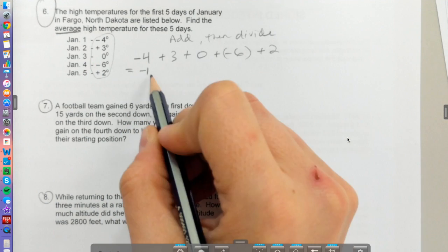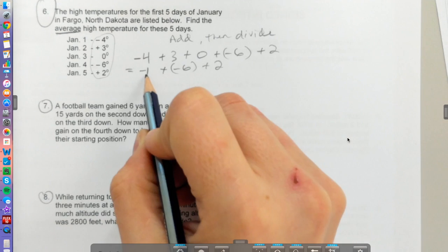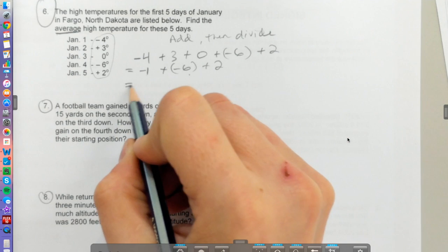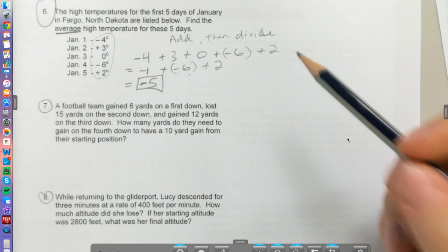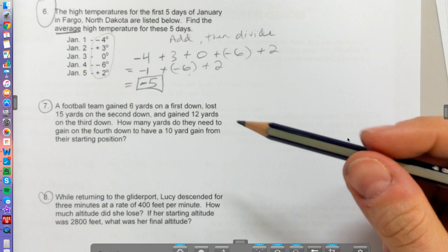-1 + 0 is still -1, plus -6, plus 2. -1 + (-6) is -7, plus 2 is just -5. You can pause and make sure you agree with that. In fact, I encourage you to pause each of these and try them before I go through them to make your life easier.